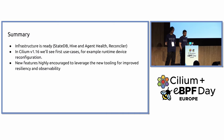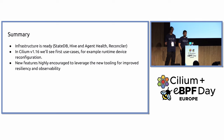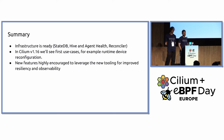In summary, what we showed here was an example of this infrastructure. We saw StateDB and the ability to inspect it, we saw the reconciler in action, and we saw agent health which is also a new component. In Cilium 1.16, we're going to have the first use cases for this — a lot of work has been done around device detection and node addresses, solving issues where the agent wasn't reacting to device and IP address changes. New features are highly encouraged to start leveraging this to get better observability and resilience.